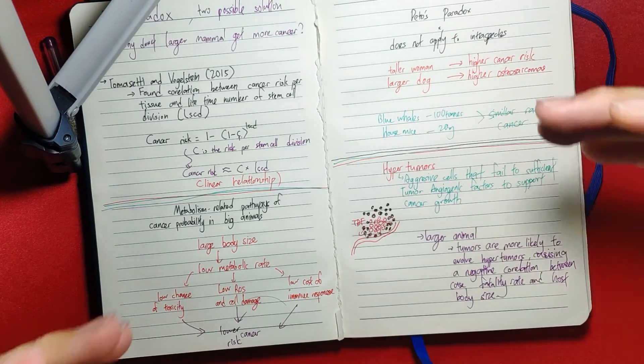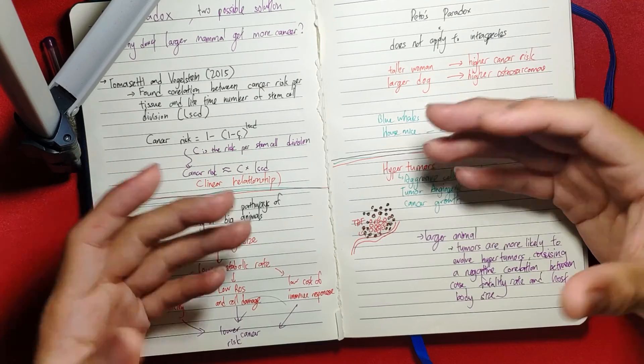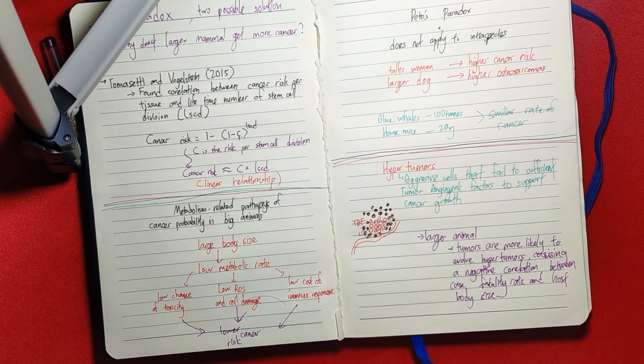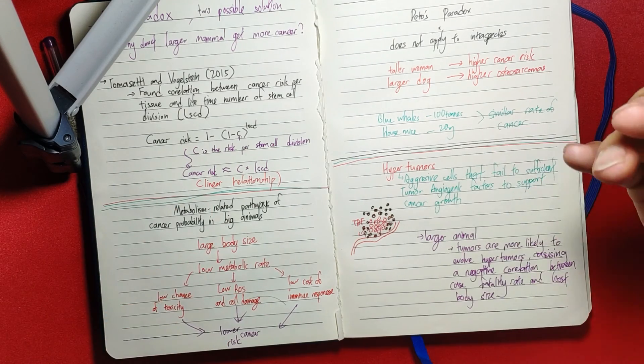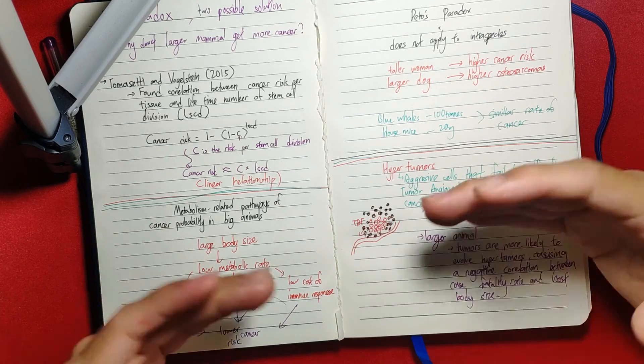This also means we have much lower ROS and cell damage because of a lower metabolic rate. You breathe in less oxygen, you oxidize less stuff, you have less ROS damage and DNA errors, because we do know that ROS is one of the main causes of DNA mutations.